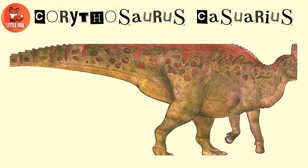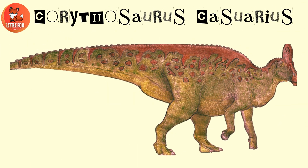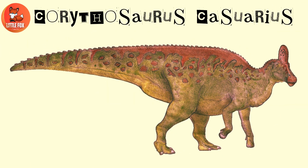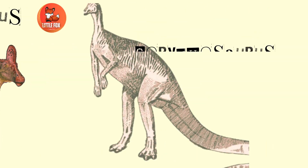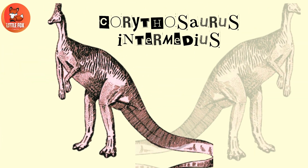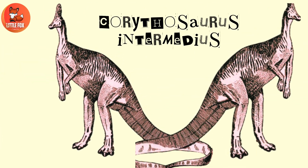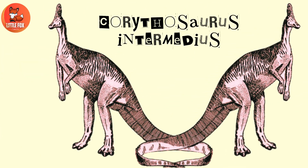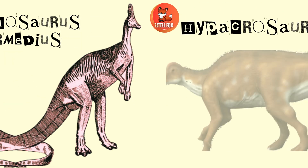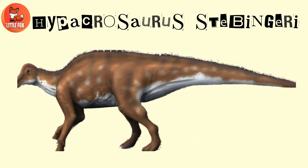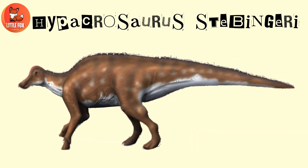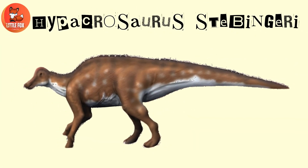Number 20: Carithosaurus casuarius. Number 21: Carithosaurus intermedius. Number 22: Hypacrosaurus stebinjuri.